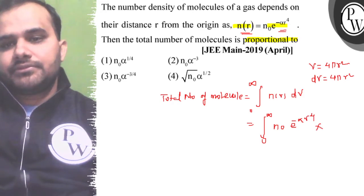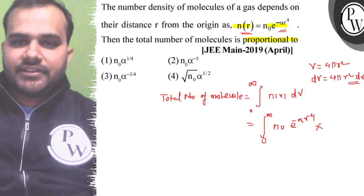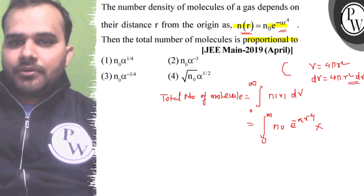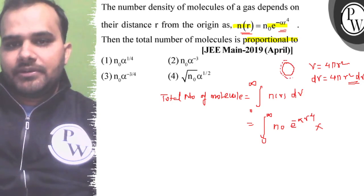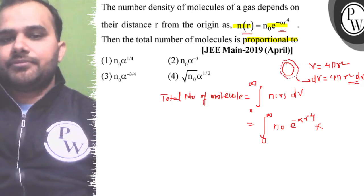Suppose this is our sphere, and if we consider this element, this is the volume of this element, that is dV in terms of r. So this is 4πr² dr.